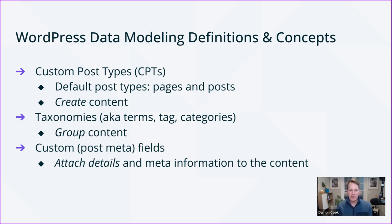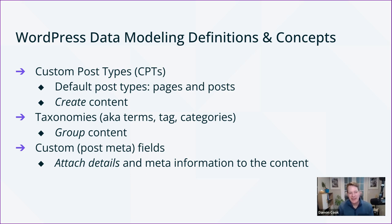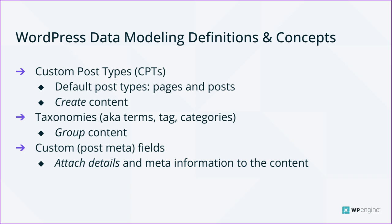I also have a visual to follow this slide. The three main data models that commonly come up in WordPress terminology are custom post types (CPTs), taxonomies, and custom fields — often called post meta fields. It can be confusing with a lot of the intermingled usage.